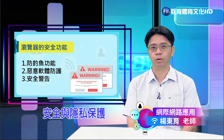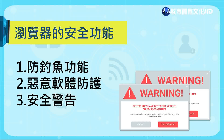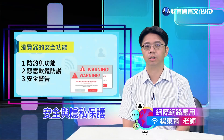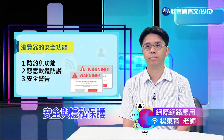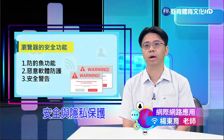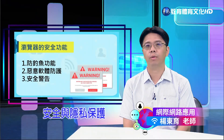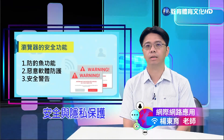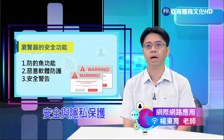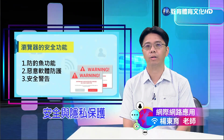一个伪装成银行网站的钓鱼网站可能与真实网站极为相似，但其目的是为了获取用户的登录资讯。关于Google Chrome的警告机制：Chrome使用网路钓鱼和恶意软体检测技术来识别可疑网站。当您访问一个潜在的钓鱼网站时，Google Chrome会显示一个红色的警告页面，通知您这个网站可能不安全。